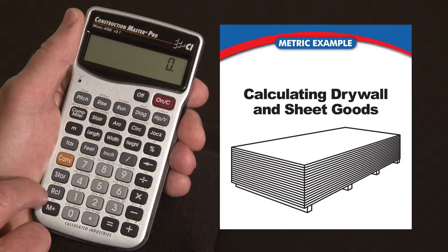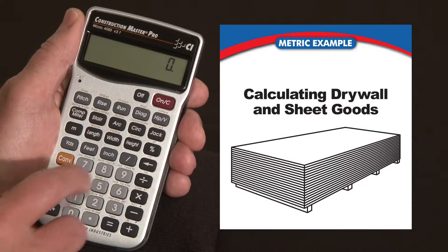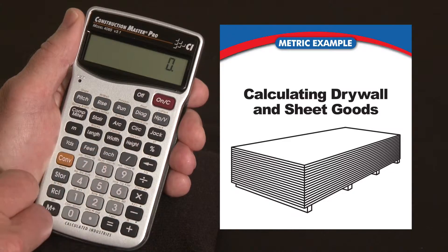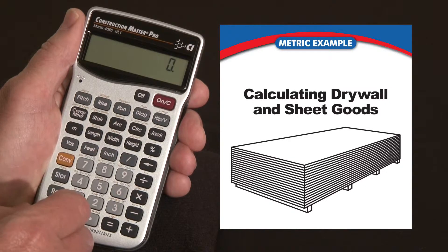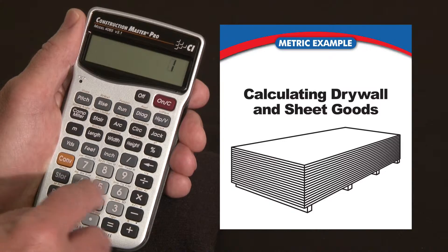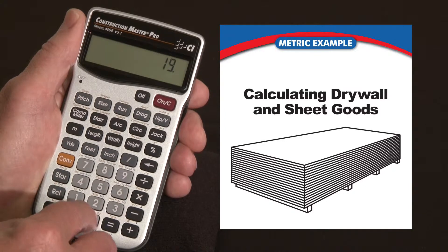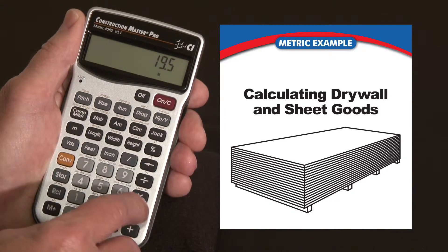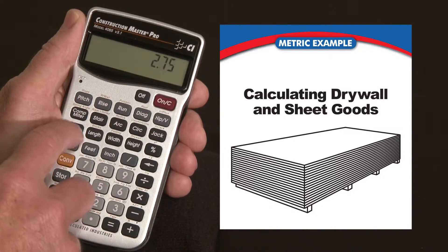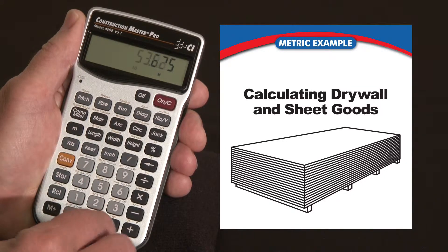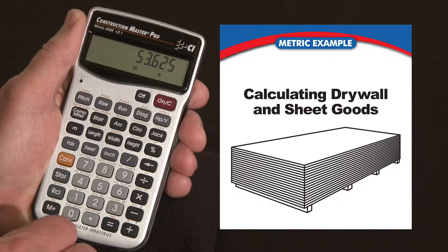Let me show you how the Construction Master Pro's built-in drywall or sheetrock key can help you calculate how many sheets you'll need of any kind of paneling, drywall, or sheet goods. It's based on the square meters or square area that you enter, and you can enter that in any way you want. We'll just say 19.5 meter wall length by 2.75 meters high, which gives us 53 square meters.